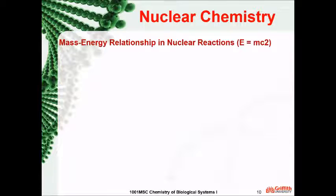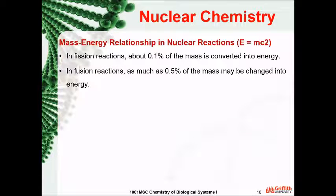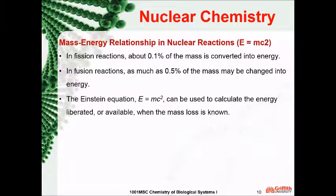As we saw in the previous two applications, there is a mass change during these reactions. In fission reactions, about 0.1% of the mass is converted into energy. In fusion reactions, as much as 0.5% of the mass may be changed into energy. The Einstein equation, E equals MC squared, can be used to calculate the energy liberated or available when the mass loss is known.